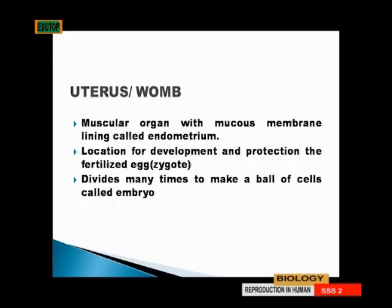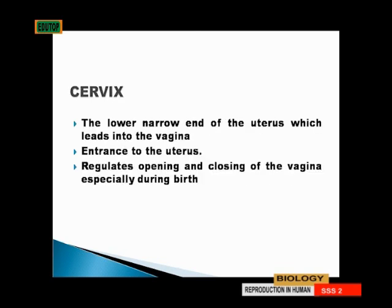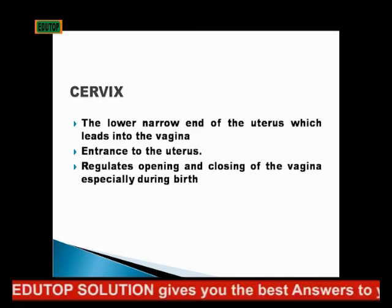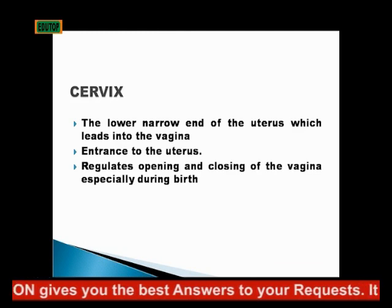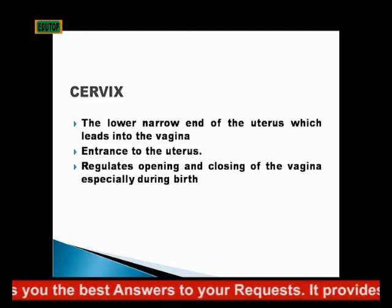The zygote stays in the womb until birth. When the birth process is about to start, it begins moving from the womb. The womb is the place of protection and development for the zygote. The uterus divides many times to make a ball of cells called the embryo. The cervix is the lower narrow end of the uterus, leading to the vagina — it is the entrance and opening of the womb.